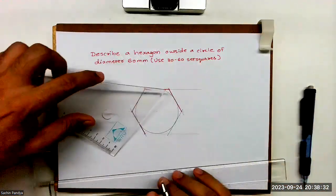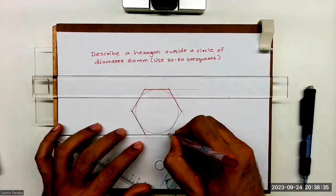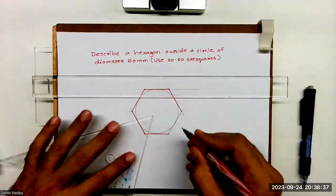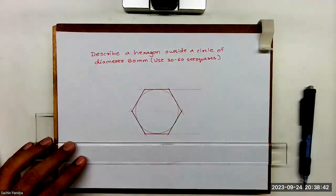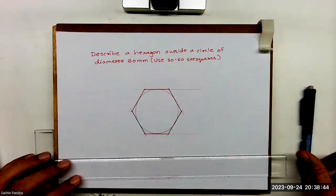This is with the set square. You can use different method. But in this sum, they have asked us to draw it by 30-60 set square. This is how you will draw hexagon.